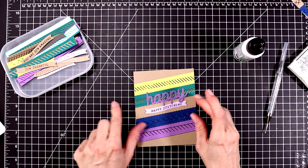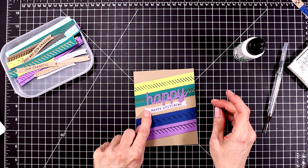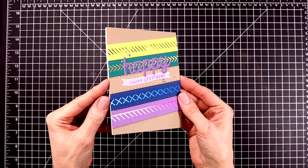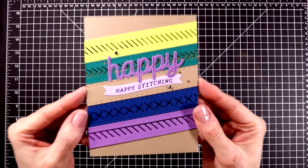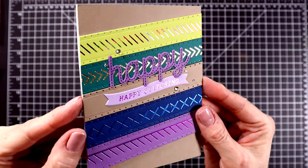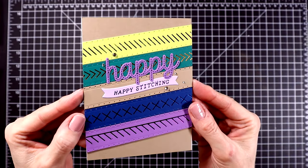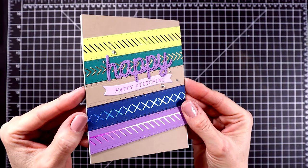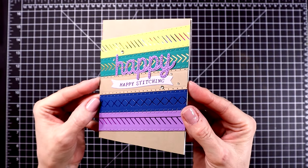So I'll glue down the happy flat and then the sentiment I chose to put under that says happy stitching. And I'm just going to glue this down flat as well. I'll kind of tuck it under the happy sentiment. The last thing I did to this card was add a few gems and here it is all done. I just love how that catches the light. It's such a fun card and I really loved pulling out multiple colors of the foil to use on this card.